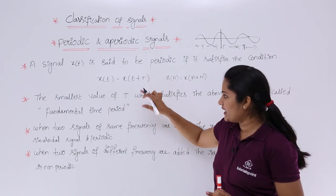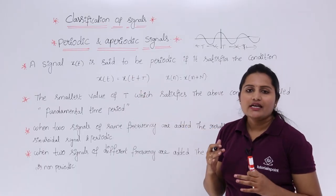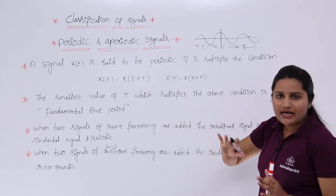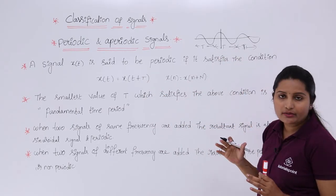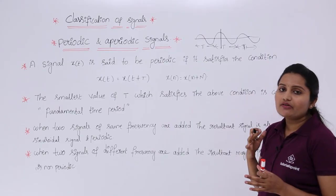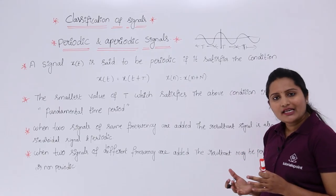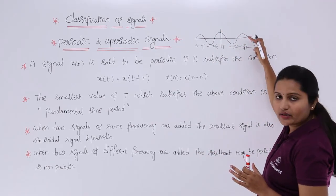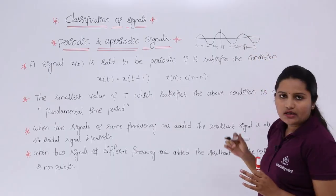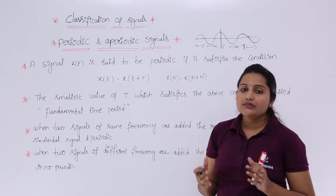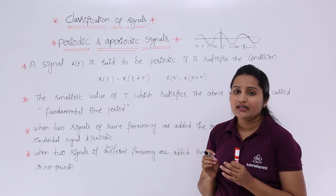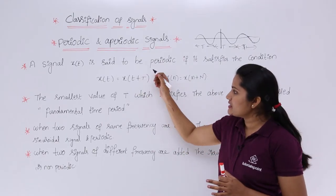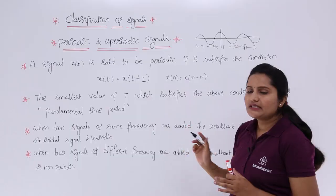The smallest value of T which satisfies the above condition is called the fundamental time period. For example, the condition can be satisfied by 2T and 3T also — that is, x(t) = x(t + T), x(t) = x(t + 2T), x(t) = x(t + 3T). But whatever the least value is, that is called the fundamental time period — the smallest time period which satisfies this relation.